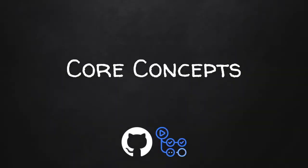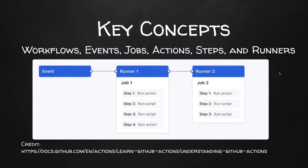We're going to do a brief overview of the core concepts for GitHub Actions and talk about some of the key terms. In GitHub Actions, the main components and key concepts are workflows, events, jobs, actions, steps, and runners. All these terms are tied together for your GitHub Action and workflow.